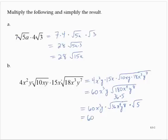So I would have 60x to the 3rd y times 6x squared y to the 4th times the square root of 5, and simplifying further, I have 60 times 6, that's 360. I would have x to the 5th and y to the 5th, and then a square root of 5.